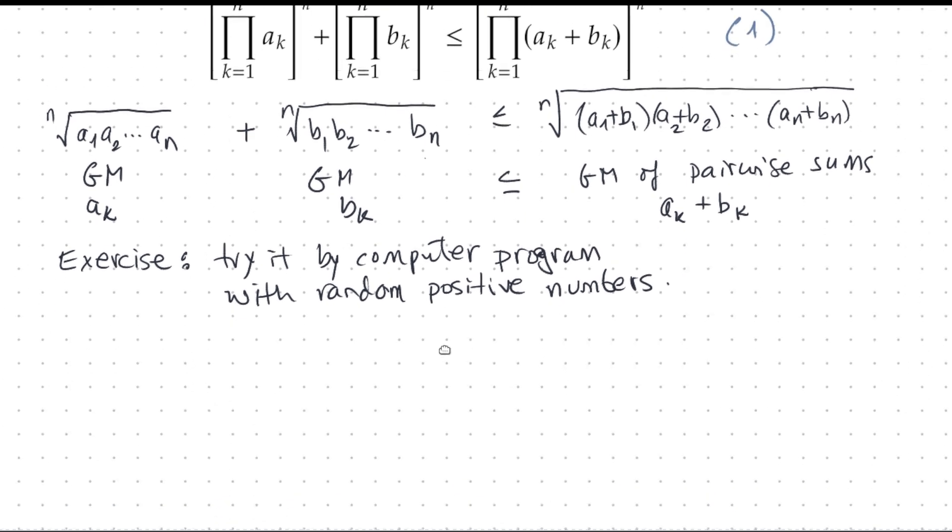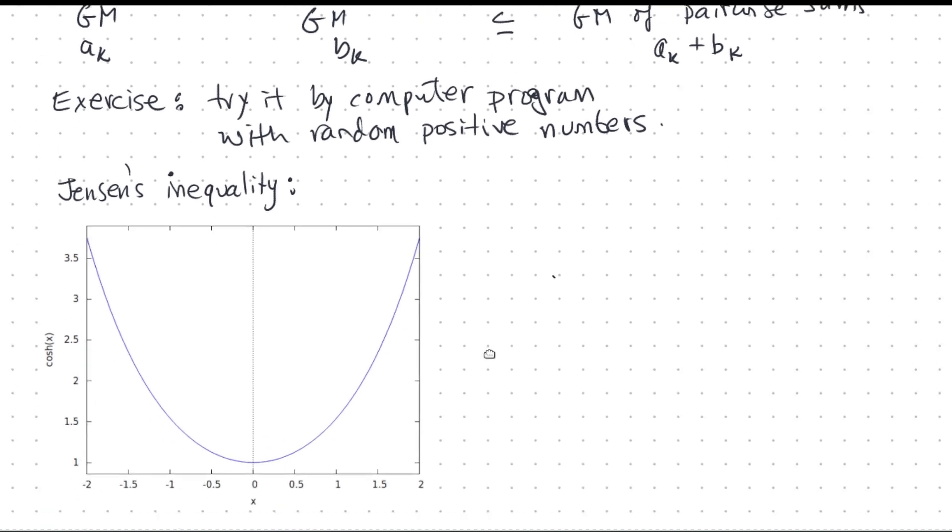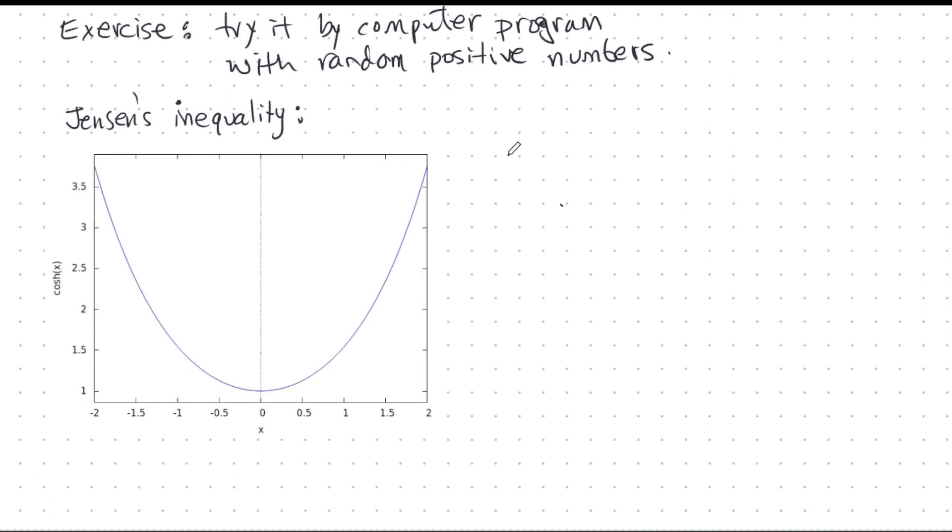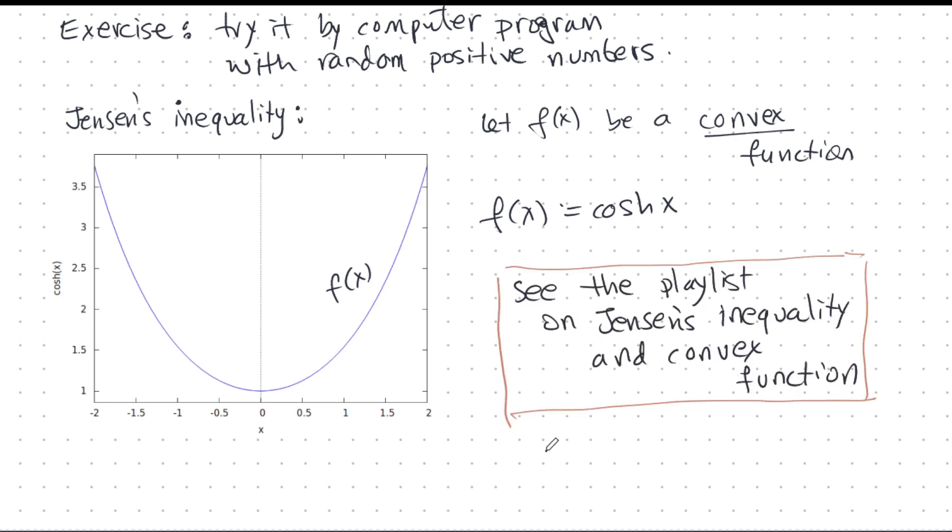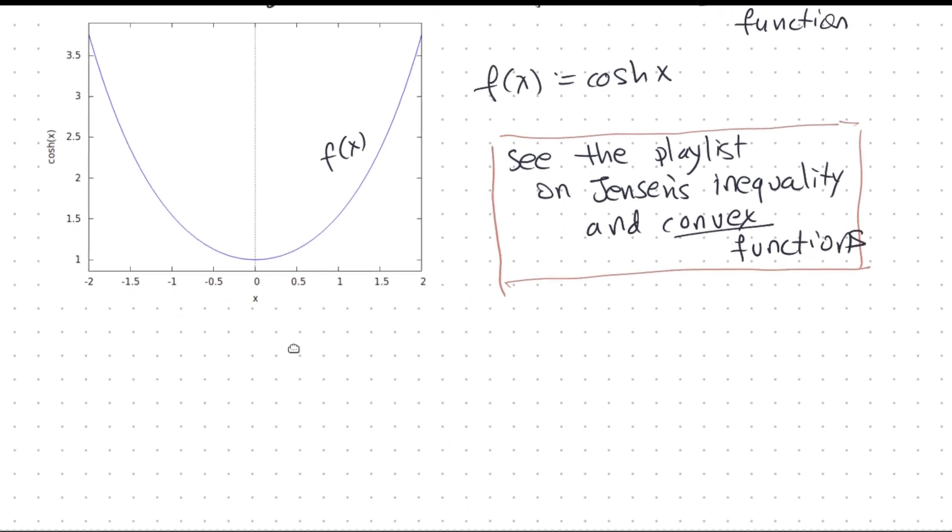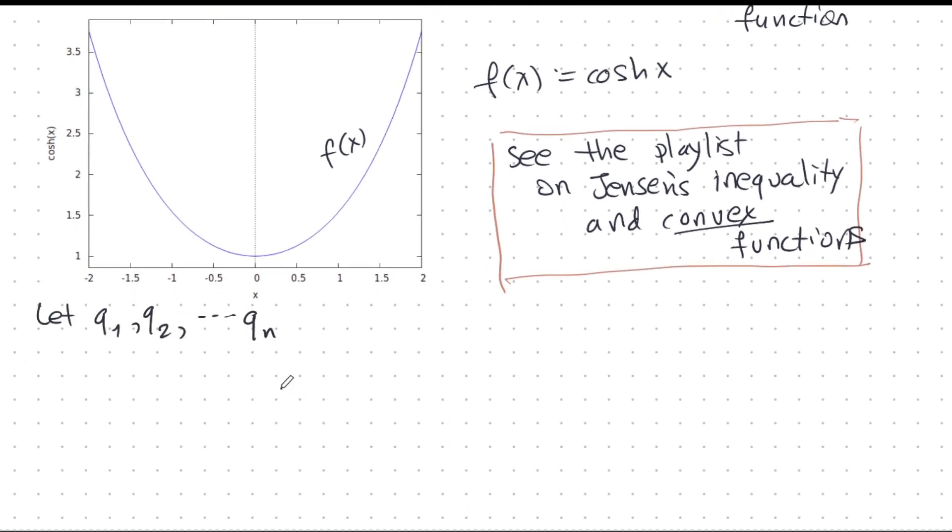Now, let's review Jensen's inequality. Here we have a convex function. And I've taken a particularly nice example of a function that's convex everywhere. f(x) = cosh x. So, if f is a convex function, then I get Jensen's inequality. And if you don't know this, I have a playlist. I have a playlist on Jensen's inequality and convex functions. And I will be adding more and more stuff to that in the future because it's a super interesting topic.